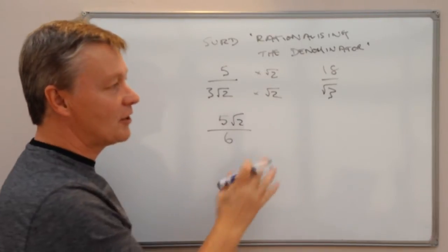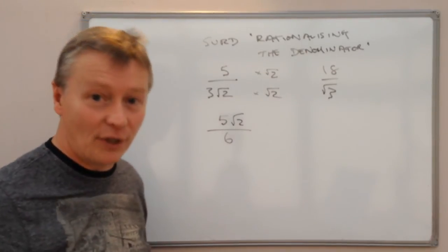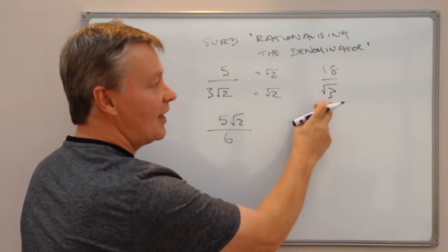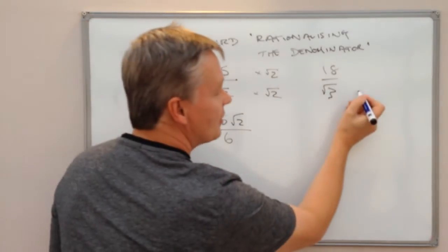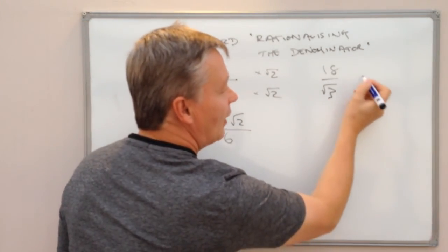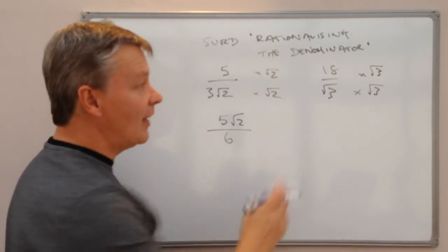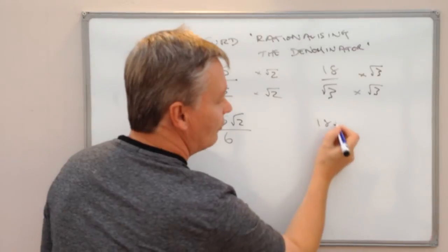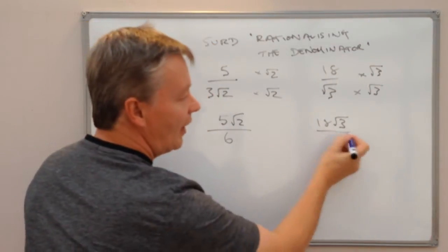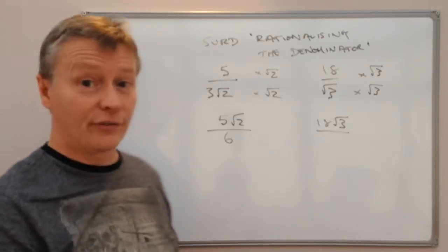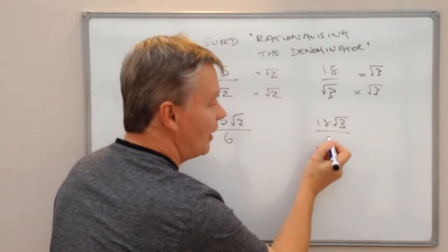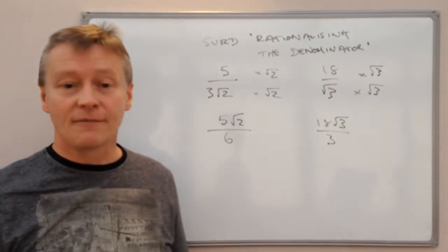Well again I'm going to multiply the top and bottom of this fraction by the same number in order to get rid of this square root. So I'm going to multiply it by the square root of 3. So what I've got at the top now is going to be 18 root 3 which is this bit here. And then root 3 times root 3, well that's going to be 3 times 3 is 9.